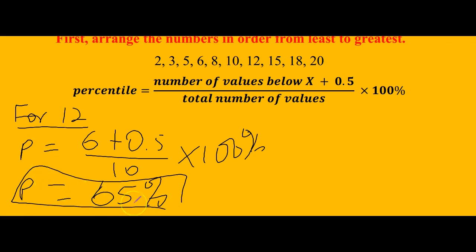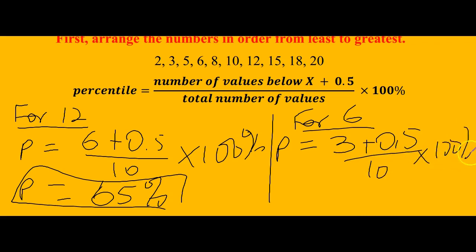How about for six? The person who scored six. We look at six. How many numbers are below six? One, two, three. So there are three numbers below six. So we do 3 plus 0.5 divided by 10, and then times 100, which gives us 35 percent. So the person who scored six did better than 35 percent of the class.